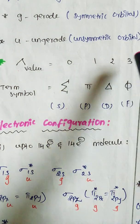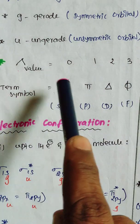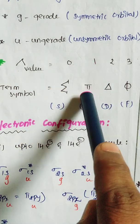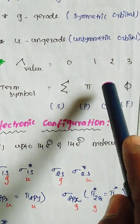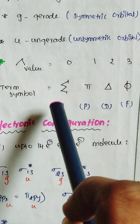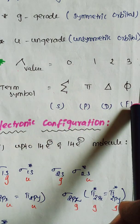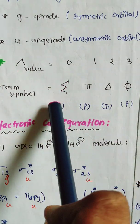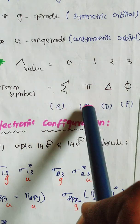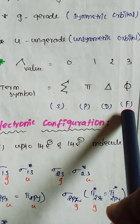The angular momentum values zero, one, two, three correspond to the term symbols Sigma, Pi, Delta, and Phi respectively. Notice that here we use the first letters of s, p, d, f — so Sigma is like s, Pi is like p, Delta is like d, and Phi is like f.